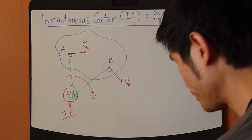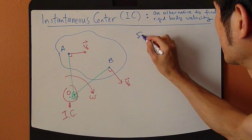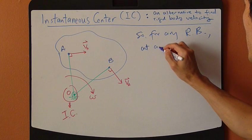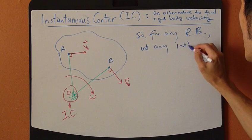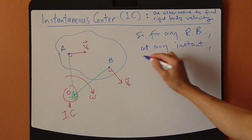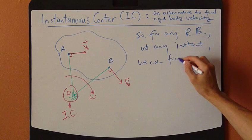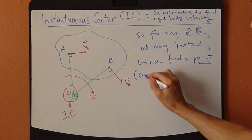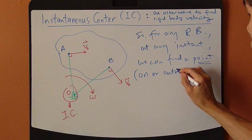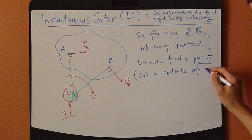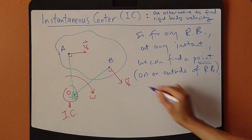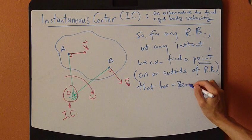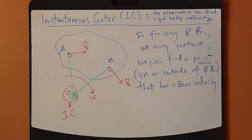So for any rigid body, at any given instance, we can find a point either on or outside of the rigid body that has a zero velocity.